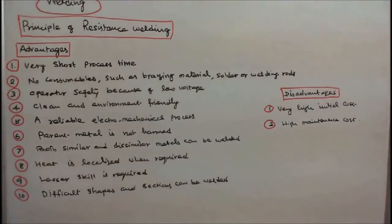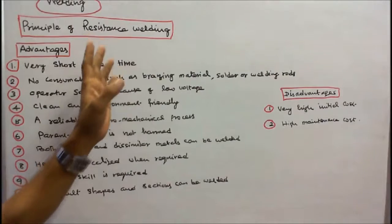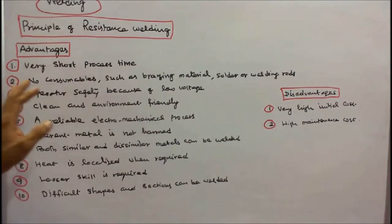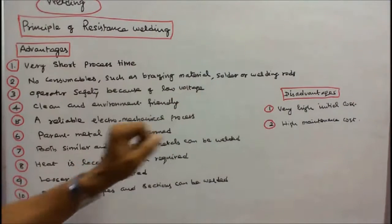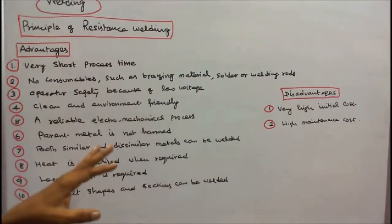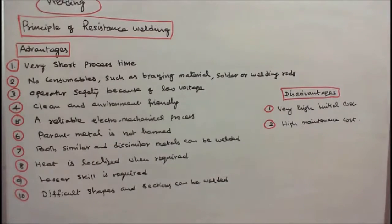Now we'll see the advantages and disadvantages of resistance welding. Advantages: number one, very short process time. Number two, no consumables such as brazing materials, solder, or welding rods. Number three, operator safety because of low voltage. Number four, clean and environment friendly. Number five, a reliable electromechanical process. Number six, parent metal is not harmed. Number seven, both similar and dissimilar metals can be welded. Number eight, heat is localized when required.